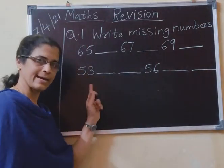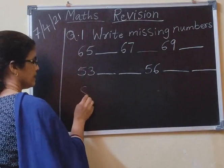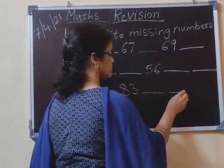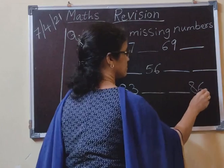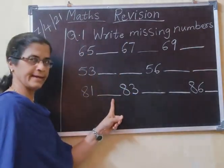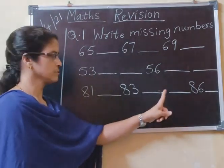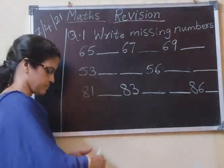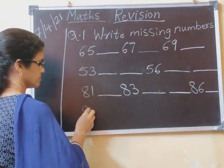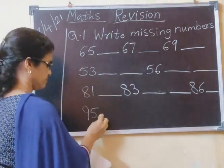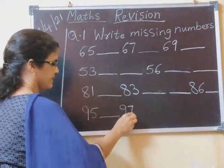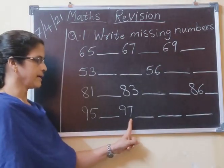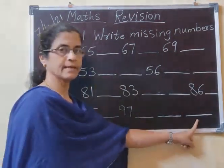After writing this, you will open the next line. 81, 83. 81 dash, 83 dash, dash 86 dash. Again, you have to read one line. 95, 97. 95 dash, 97 dash, dash.